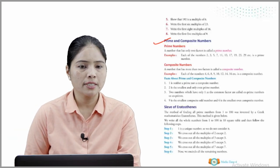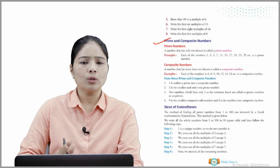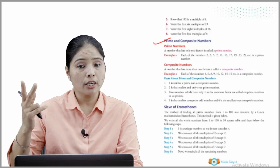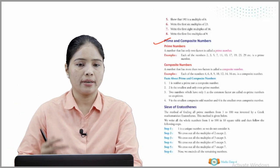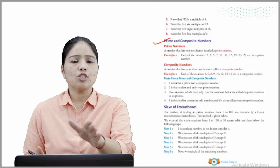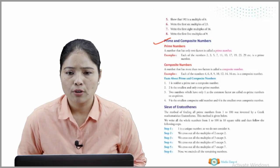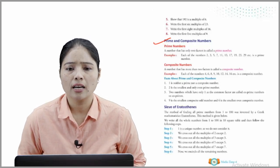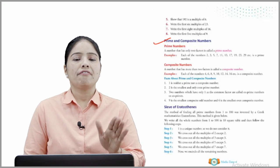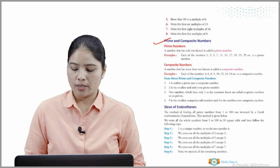Composite numbers: a number that has more than two factors is called a composite number. Examples — each of the numbers 4, 6, 8, 9, 10, 12, 14, 16 is a composite number.